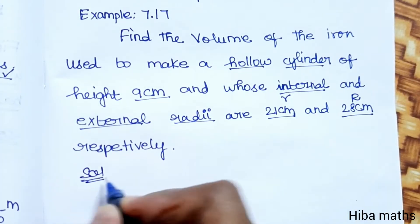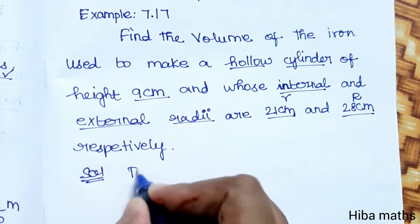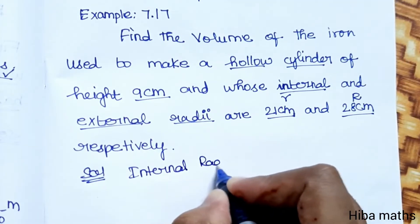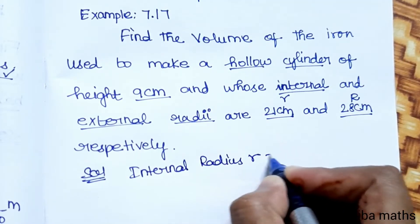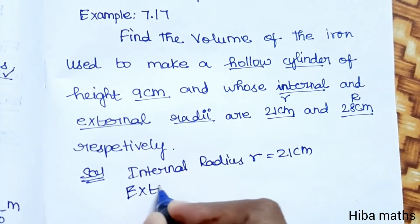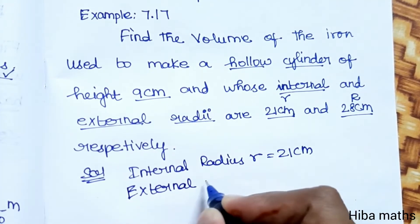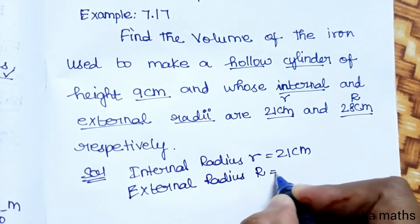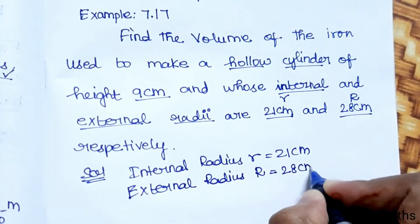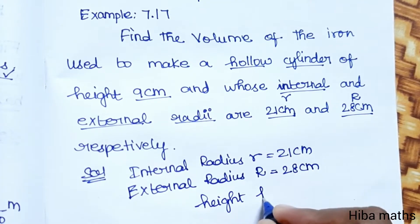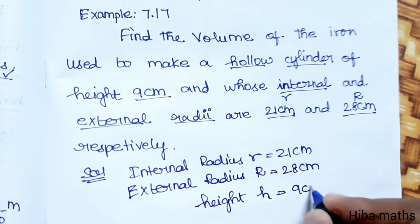Solution: Internal radius small r equals 21 cm, external radius capital R equals 28 cm, height h equals 9 cm.